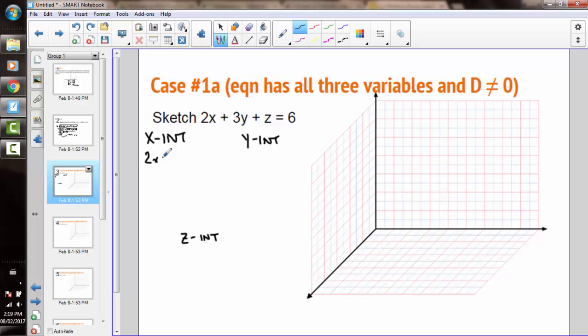The x-intercept happens when y and z are 0, so I end up with 2x equals 6, or x equals 3. The y-intercept happens when x is 0, and z is 0, so I end up with 3y equals 6, or solving y equals 2.